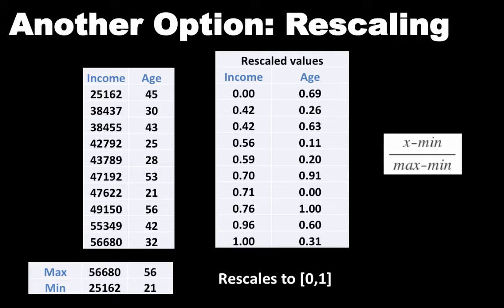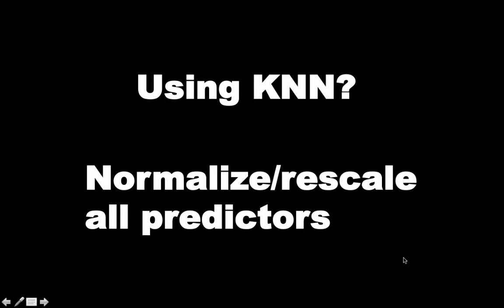So now both attributes — income and age — will all have values between 0 and 1, and therefore no one attribute will be able to dominate distance calculations. In practice, you could use either normalization/standardization or rescaling as we have described. Often the results will be very, very similar, if not identical. Based on what we have discussed, if you are using the KNN approach — either for classification or for regression — you have to normalize or rescale all the predictors.